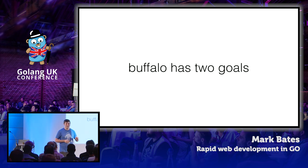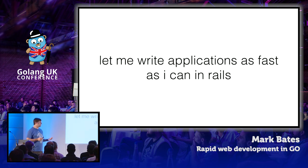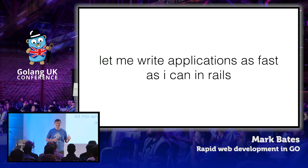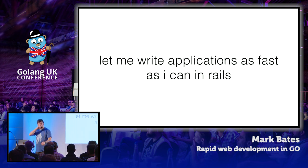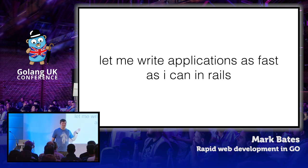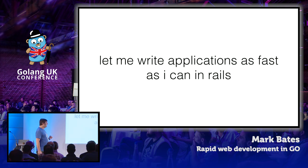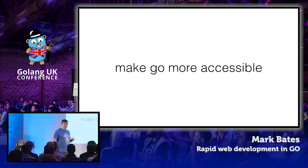Buffalo has two goals. The first one is incredibly selfish — I'm not going to lie: it's to let me write applications as fast as I can in Rails. That is 100% the first goal. I consider Brian Kettleson to be the primary user of Buffalo — I think he's pushed more production Buffalo apps than I have. The other goal is a bit more altruistic: I want to make Go more accessible, and I think the web is the best place to do that.